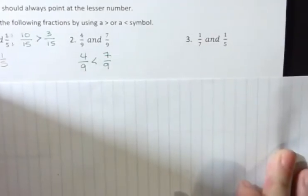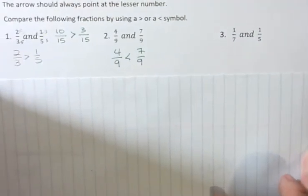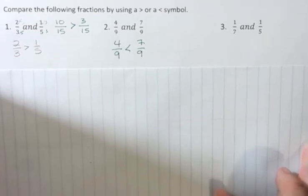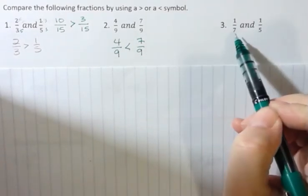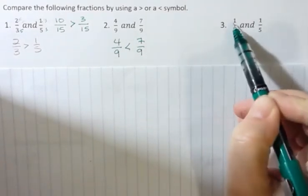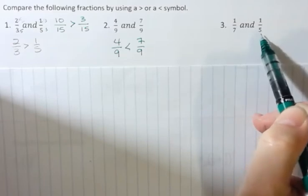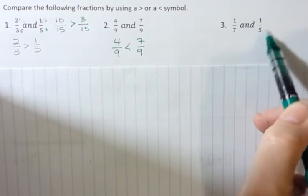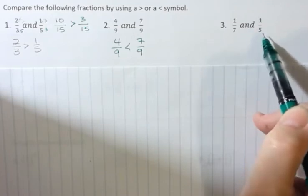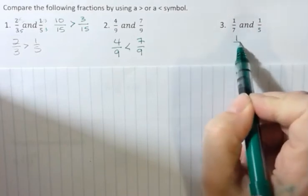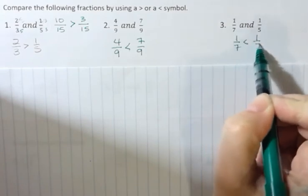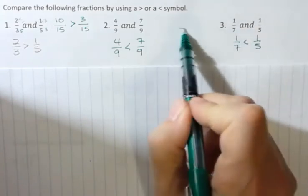What about one-seventh and one-fifth? Well, when you have this one on the top, think about it. If you're going to share a pizza with seven people and you get one piece, or share it with five people and get a piece, which one is the bigger piece? You're going to get more if you're only sharing with five. So, I know in this case that one-seventh is smaller than one-fifth.